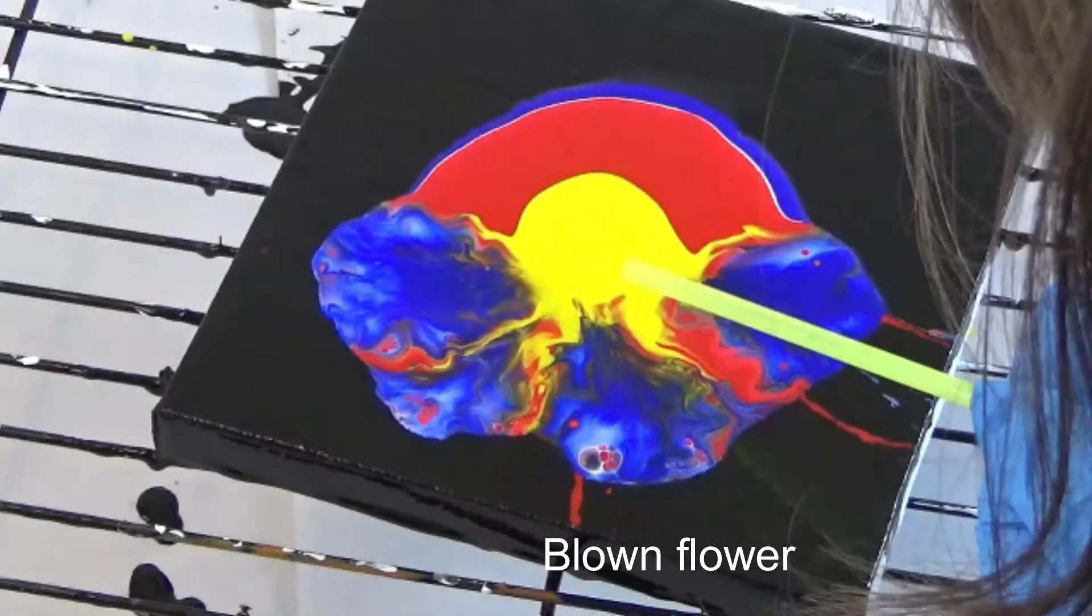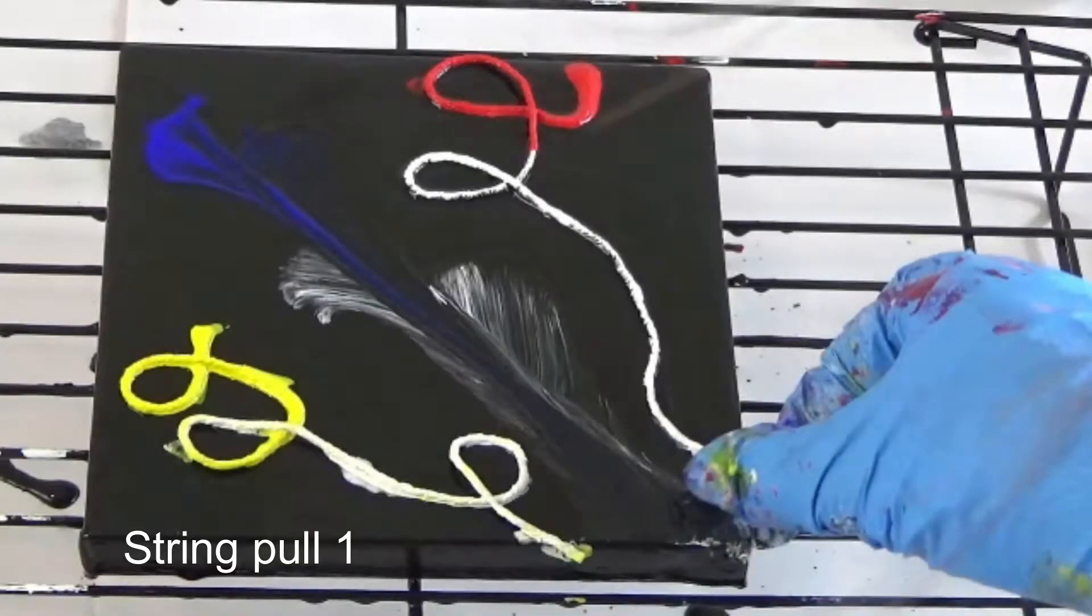Such as using a drinking straw to blow patterns into the paint, using string dipped in paint to drag across the paint to draw patterns.